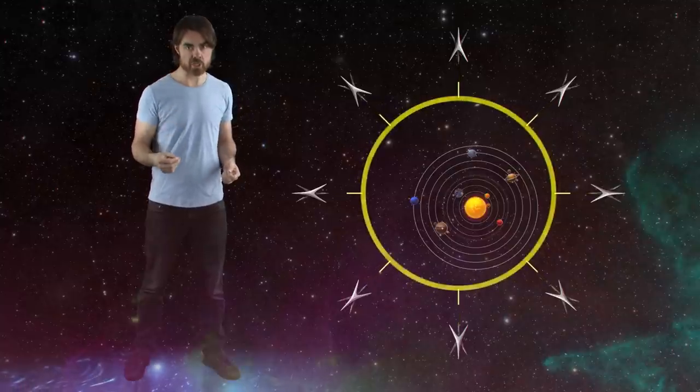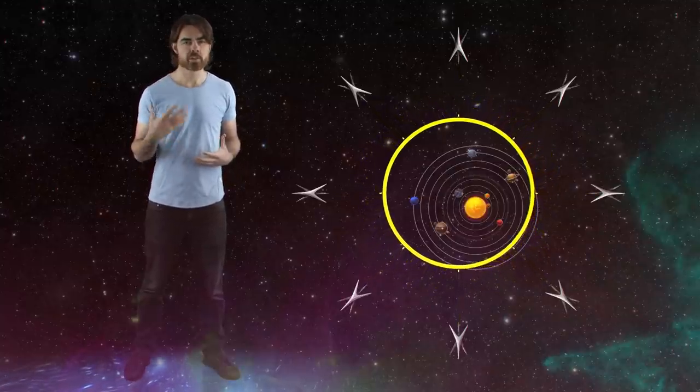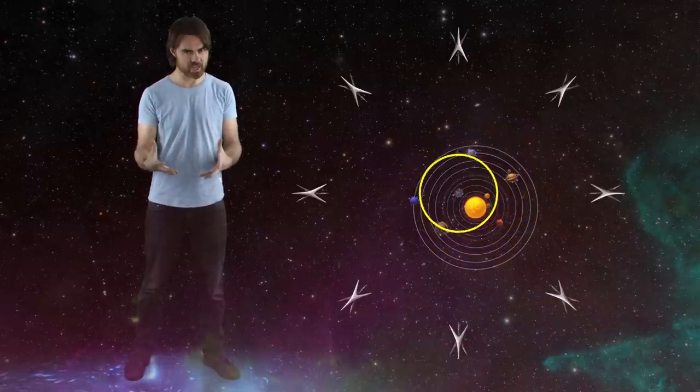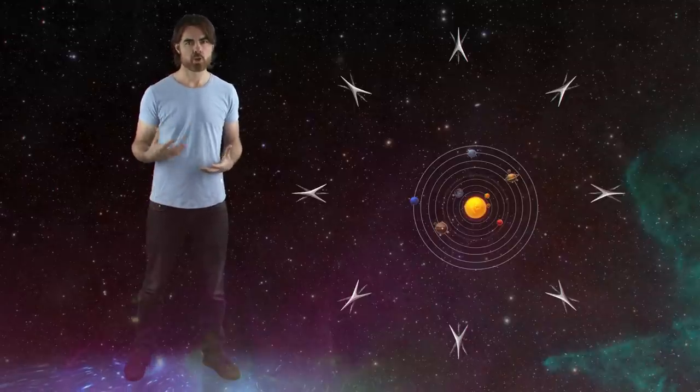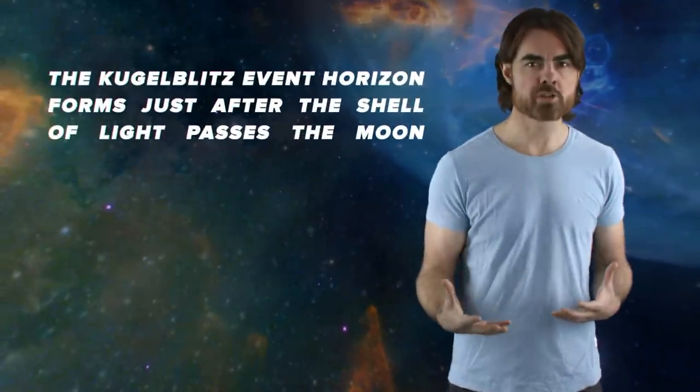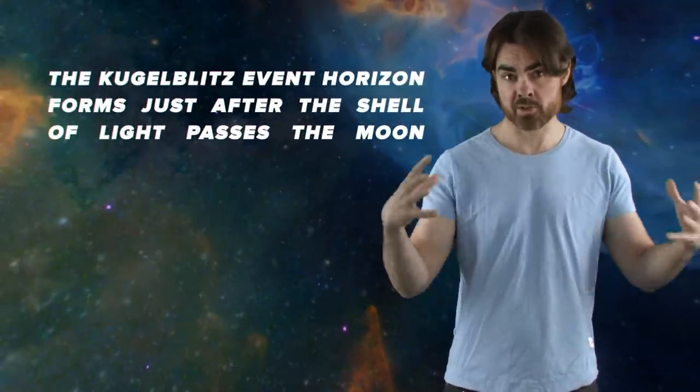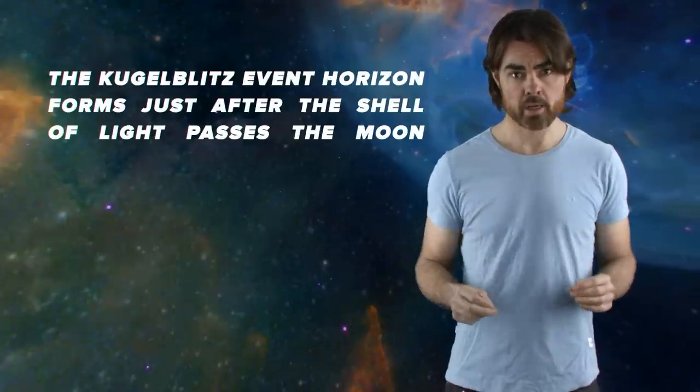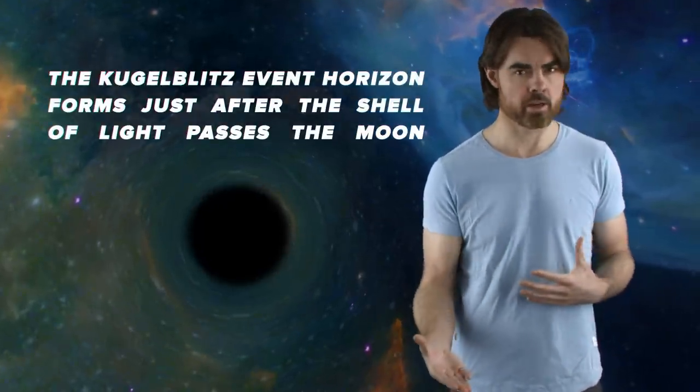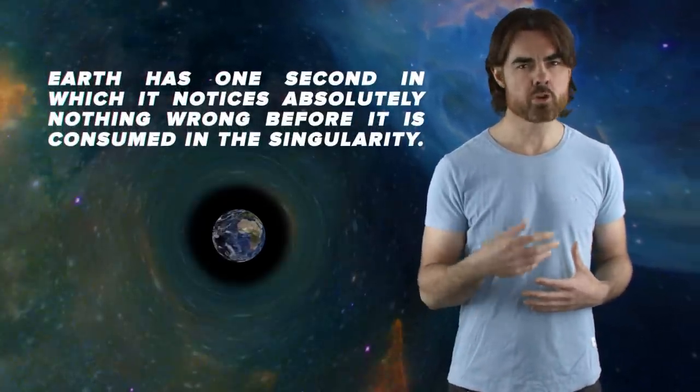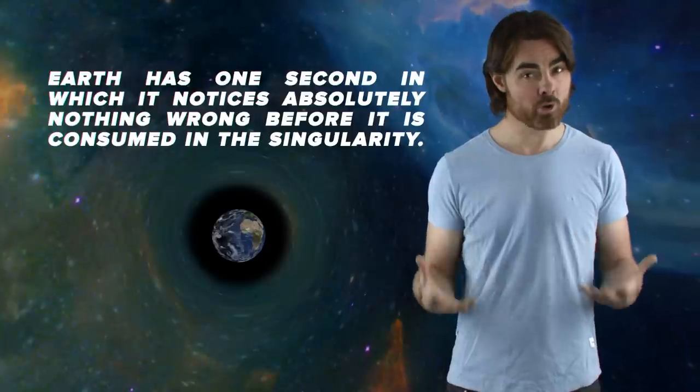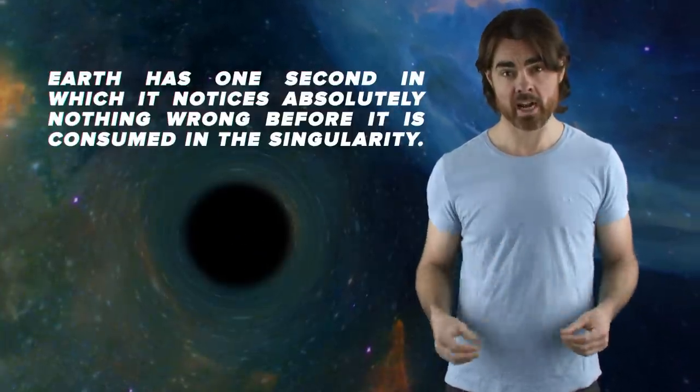Now, light has energy and so has a gravitational effect. This blast has a mass energy equivalence of 100,000 suns. The Schwarzschild radius of a black hole with this mass is about one light second. So the kugelblitz event horizon forms just after the shell of light passes the moon. At that point, it will look exactly like a black hole from the outside. From the inside, Earth has one second in which it notices absolutely nothing wrong before it's consumed in the singularity.